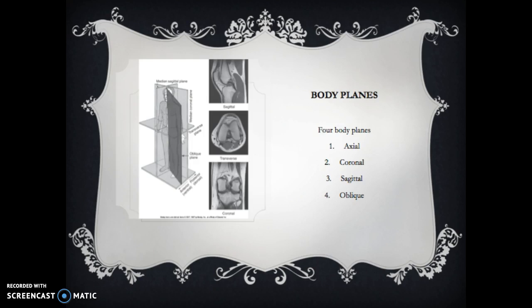The three main body planes within the body are axial, which is also called transverse, coronal, and sagittal. The fourth one is mainly for MRI scanning which is the oblique plane, which is a combination of any of the top three.